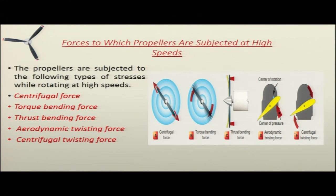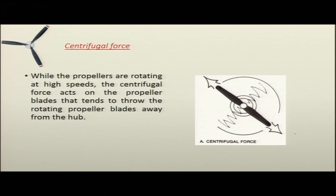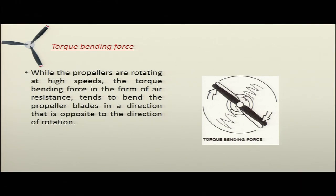The centrifugal force acts on the propeller blades and tends to throw the rotating propeller blades away from the hub. The torque bending force is a form of air resistance which tends to bend the propeller blades in a direction opposite to the direction of rotation. While the propellers rotate at high speeds, the torque bending force tends to bend the propeller blades in the direction opposite to rotation.